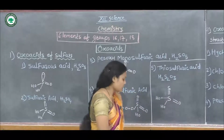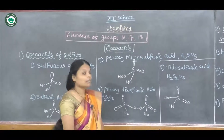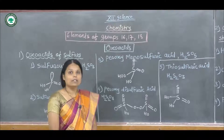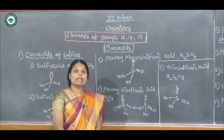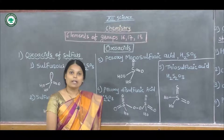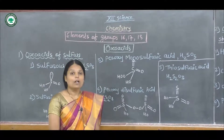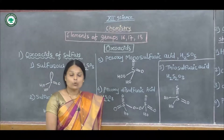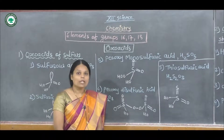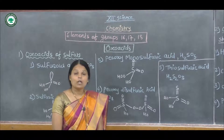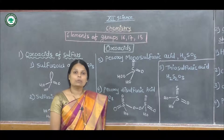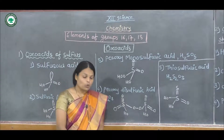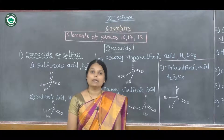Today we are going to start the chapter on the elements of group 16, 17, and 18. In this chapter we will discuss the electronic configurations of group 16, 17, and 18, as well as the physical and chemical properties of all groups. Group 16 is the oxygen family, group 17 is the halogen family, and group 18 is the noble gas or inert gas elements.